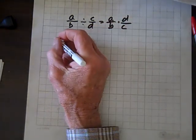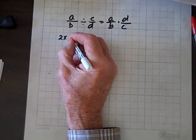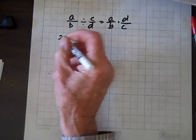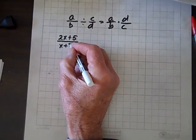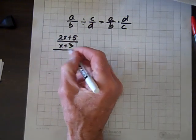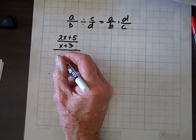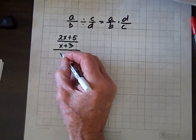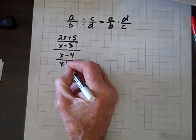Now, here's what we've got on our hands. (2x+5)/(x+3) divided by (x-4)/(x+3).